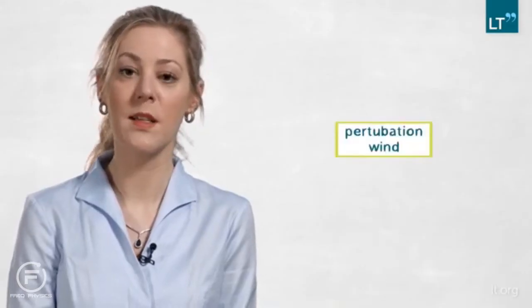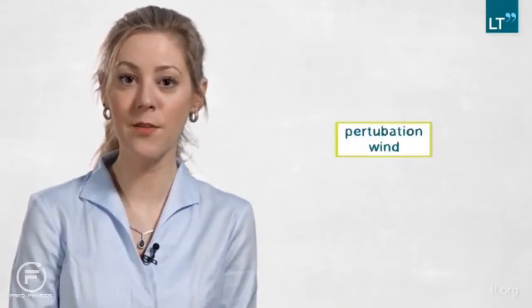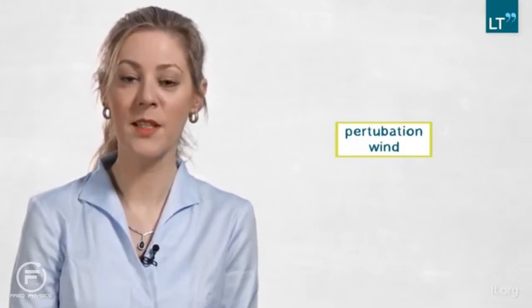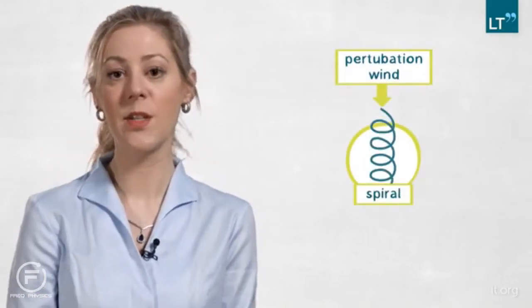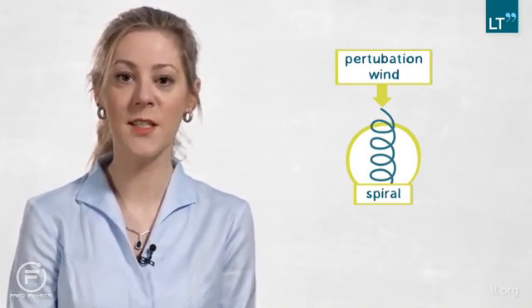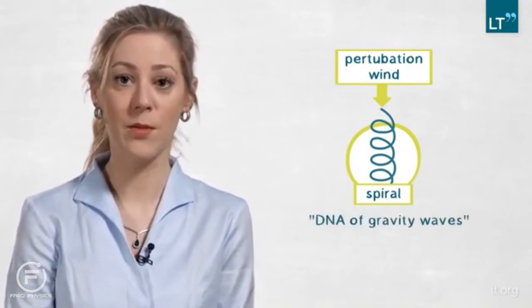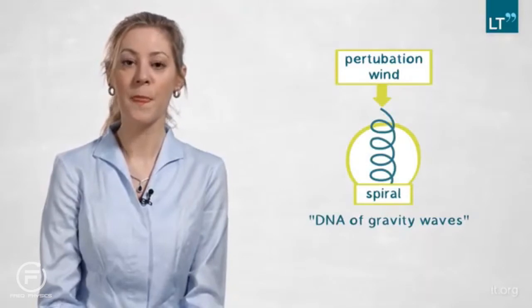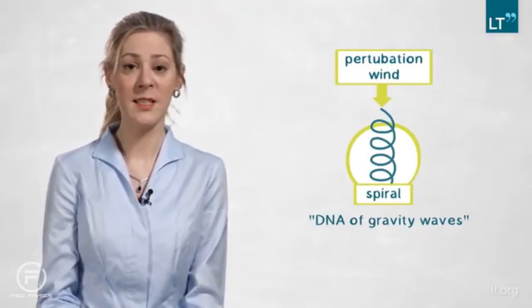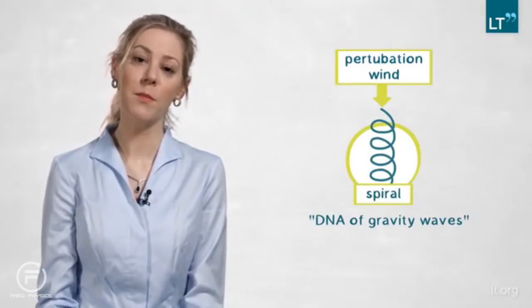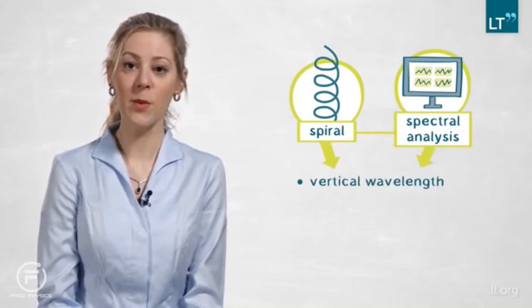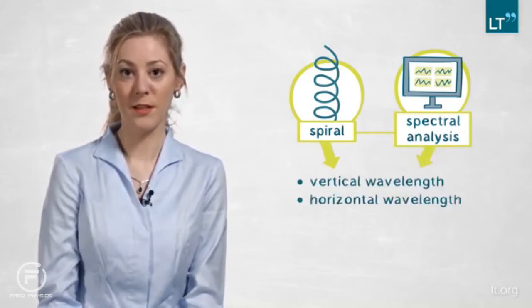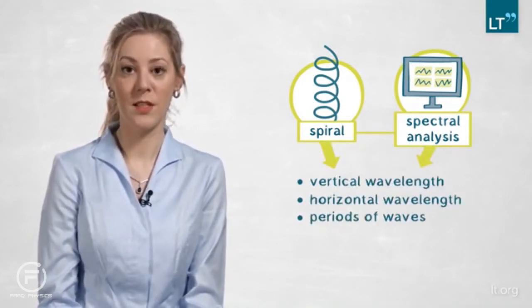The perturbation wind associated with low frequency gravity waves has a unique property, and that is that it describes a spiral with height. And you can think of the spiral very much as the DNA of gravity waves. So what we do is to determine, in a statistical way, the mean properties of the spiral. And this, in combination with a standard spectral analysis, tells us the vertical wavelength, the horizontal wavelength, and the periods of these waves.